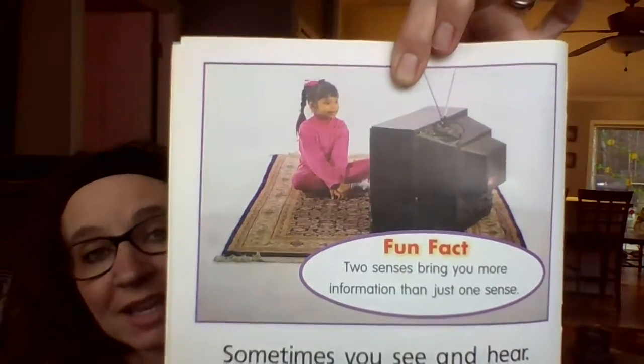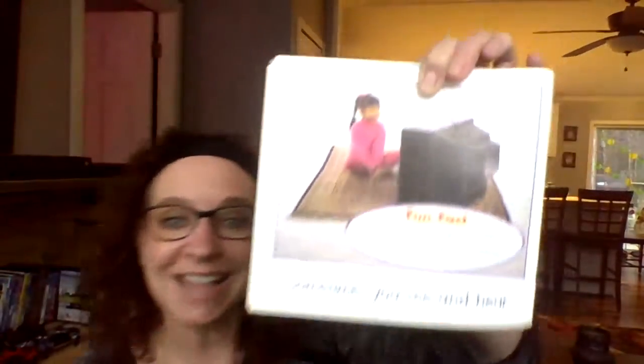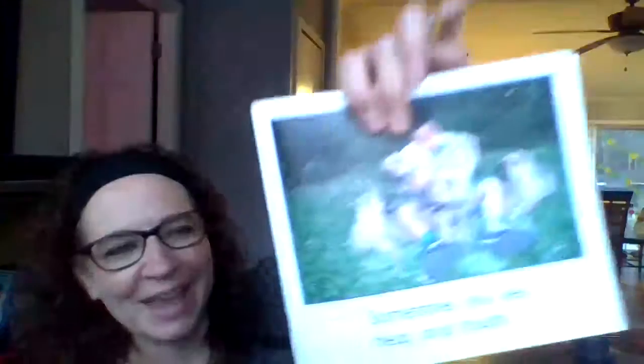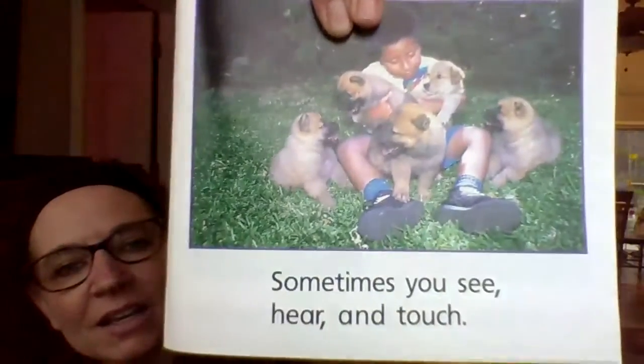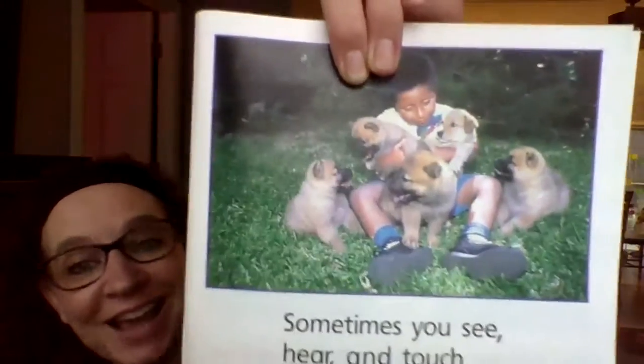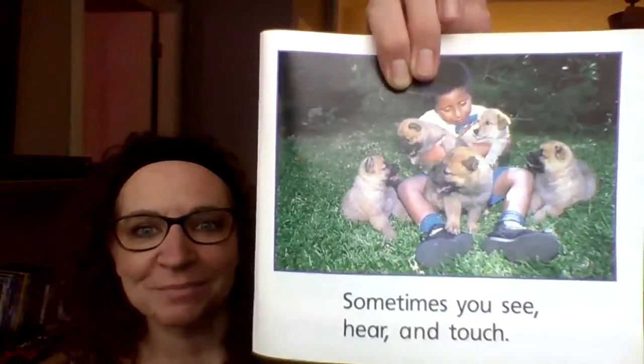Sometimes you can see and hear at the same time. The girl is seeing and hearing the television. The fun fact says two senses bring you more information than just one — so if you use two senses, you're getting more information. Sometimes you can see, hear, and touch all at once. The boy is seeing the puppies, hearing the puppies, and touching the puppies — he could probably even smell them. Puppies have a great smell!